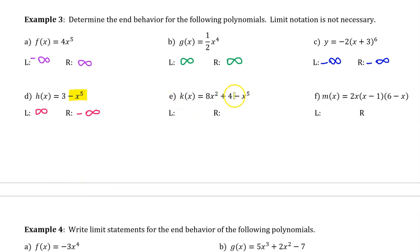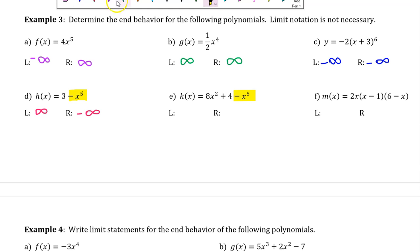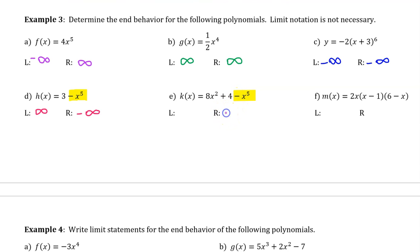For part e, the leading term is the highest degree term. The leading coefficient is negative, which means the right end behavior is approaching negative infinity. The degree is odd, so the left end behavior will be the opposite, approaching positive infinity.